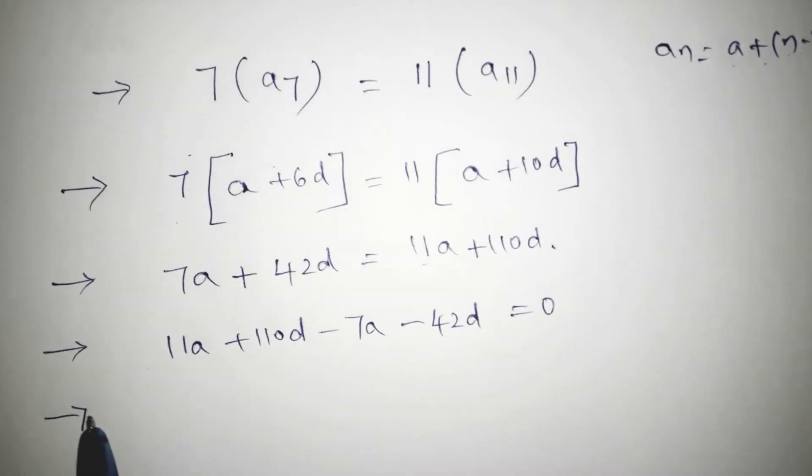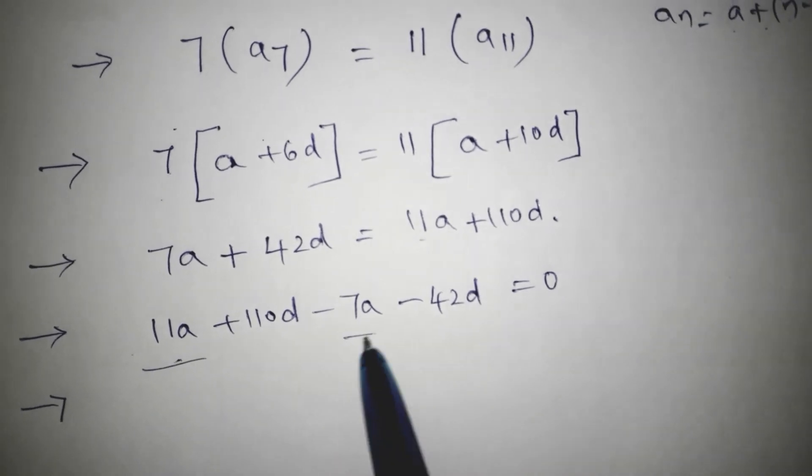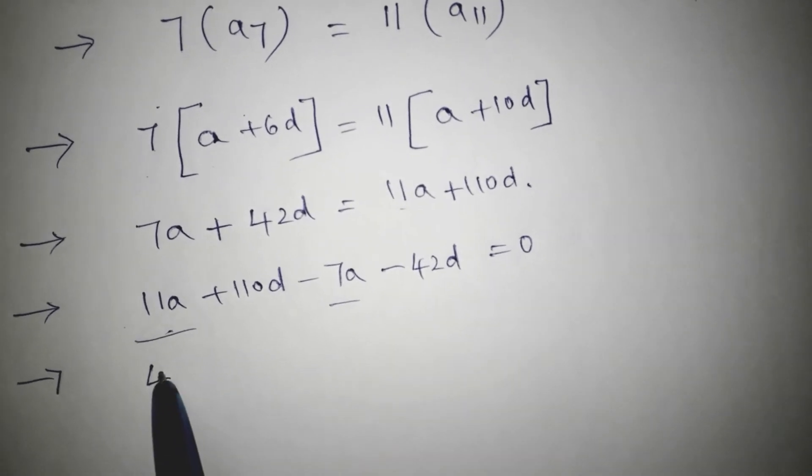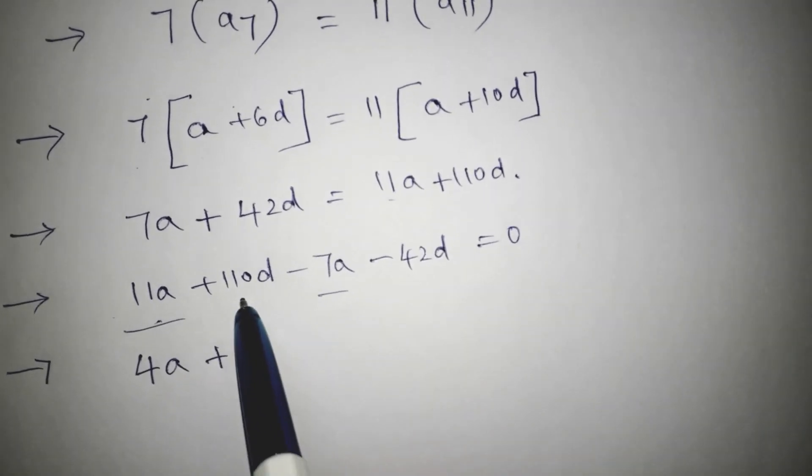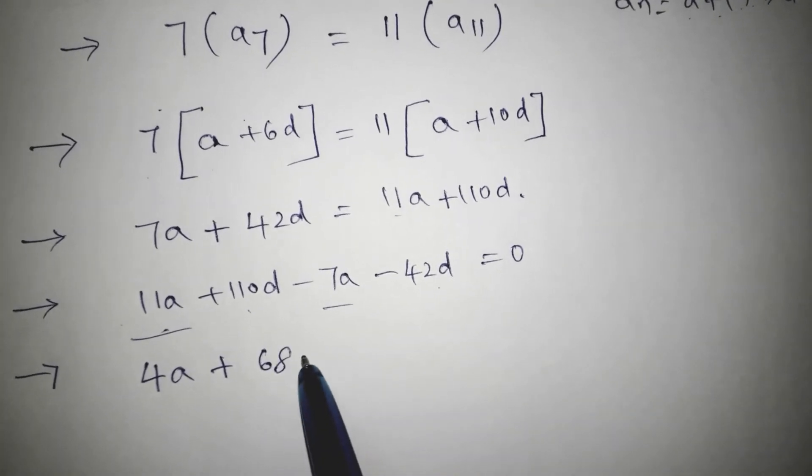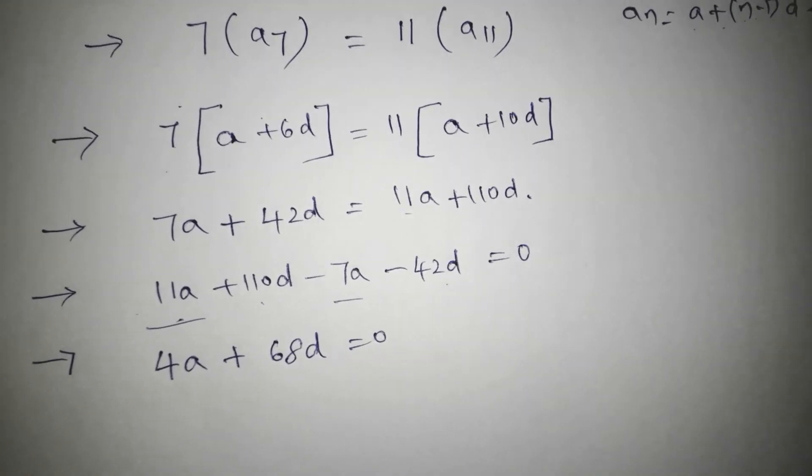11a minus 7a is 4a plus 110d minus 42d is 68d equals 0.